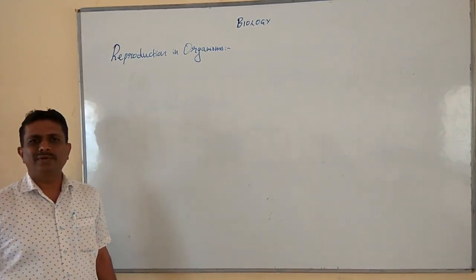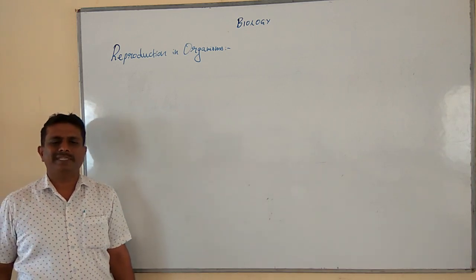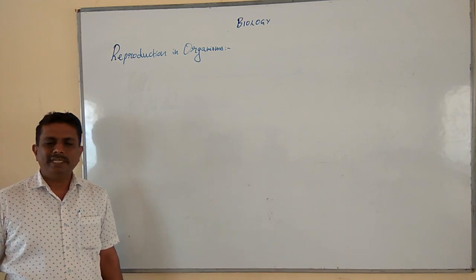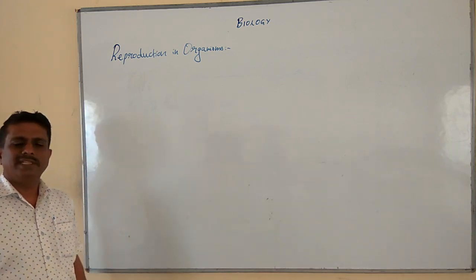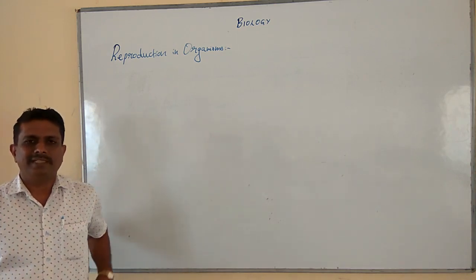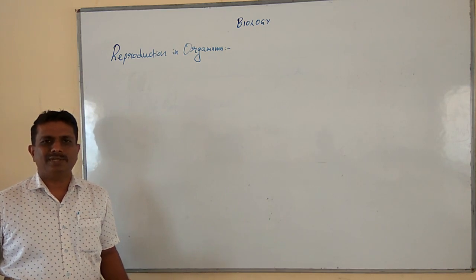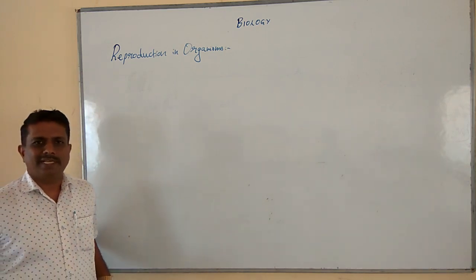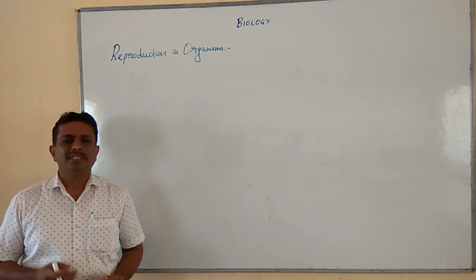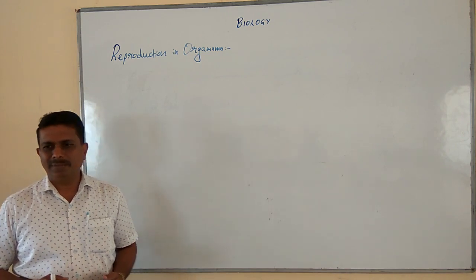Hello friends, today we shall discuss with the friends group the main important introductory aspects of the first important chapter in biology. The first unit in biology is reproduction. It mainly comprises of four important chapters: the first chapter is Reproduction in Organisms, the second is Sexual Reproduction in Flowering Plants, the third is Human Reproduction, and the last important chapter is Reproductive Health. Today we shall discuss the introductory aspects of the first chapter, Reproduction in Organisms.